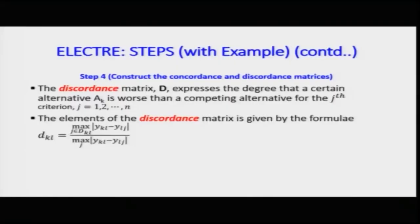The discordant matrix D expresses the degree that a certain alternative a_k is worse than the comparing alternative a_l, based on criteria j = 1 to n. I will compare a_1 with a_1 based on all criteria, then a_1 with a_2 for all criteria, then a_3, a_4, a_5 individually till a_m with respect to a_1 based on each criterion. The elements of the discordant matrix — d_11, d_12, and so forth — are given by the maximum values of the levels.